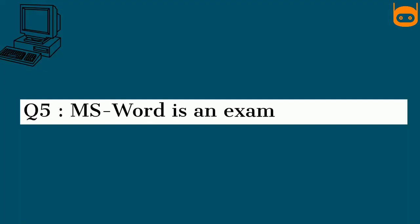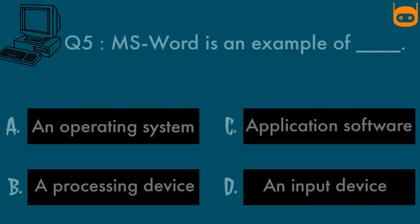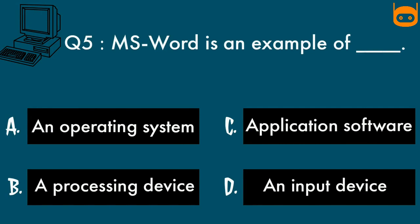Our fifth question is: MS Word is an example of DASH. Options are: Option A, an operating system. Option B, a processing device. Option C, application software. Option D, an input device.